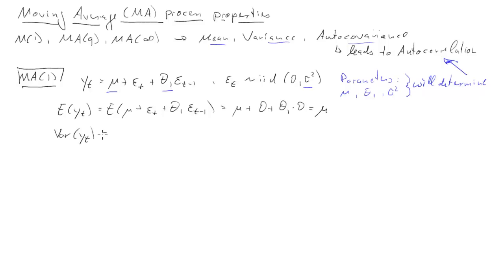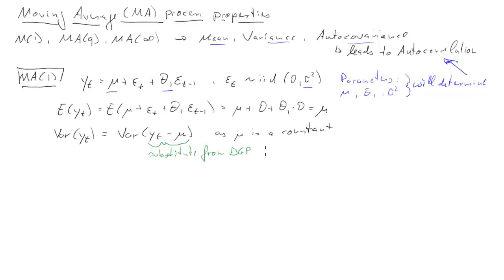The variance of Y_t is a bit more complicated. The variance of Y_t equals the variance of Y_t minus mu, since mu is a constant and subtracting a constant doesn't change the variance. We now substitute Y_t minus mu from the data generating process — that's our MA1 equation.